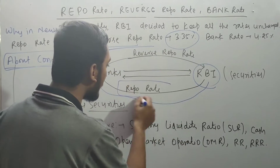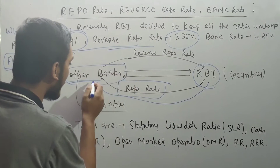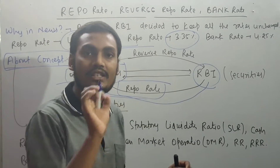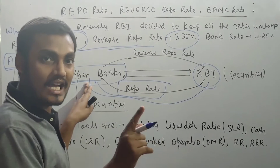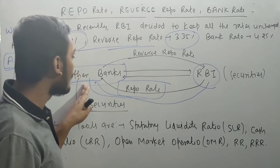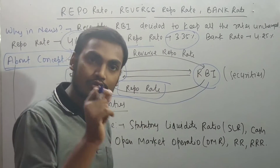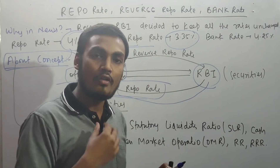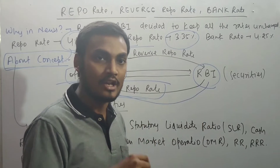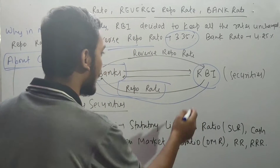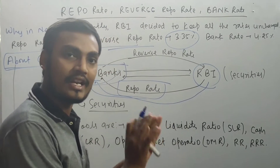This lending by the RBI to any kind of scheduled bank, rural bank, or infrastructure bank is known as the Repo Rate. Obviously, if those banks are taking money from the RBI, they have to pay interest to the RBI. Just like we as a retailer take credit from a bank and pay interest, similarly when RBI lends, these banks pay interest to RBI. This is known as the Repo Rate.